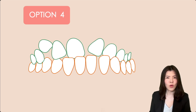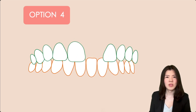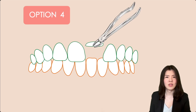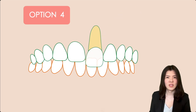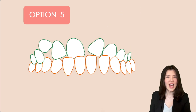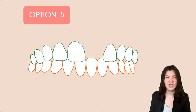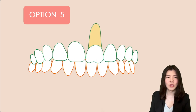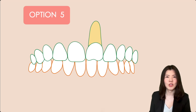Option four: surgical repositioning of the impacted tooth. And the last option, option five: surgical extraction of the impacted tooth and auto-transplantation of a premolar to the region.